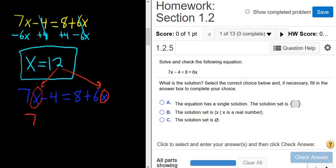But let's do it for fun. 7 times 12 minus 4. And the question is, is that equal to 8 plus 6 times 12? So let's see, 7 times 12. How do you do that in your head? The way I do it is 7 times 10 is 70. 7 times 2 is 14.